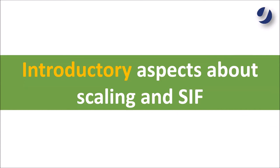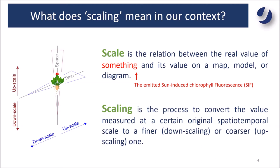Let me introduce some initial concepts about scaling. First of all, what is scale? Scale is the relation between a real, original value of something — in our case, a remote sensing variable — and its value on a map, a model, or a diagram. What is scaling? Scaling is the process to convert the original value measured at a certain spatiotemporal scale to a finer or coarser one.